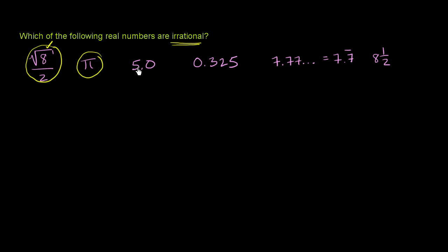5.0. Well, I can represent 5.0 as 5 over 1. So 5.0 is rational. It is not irrational.